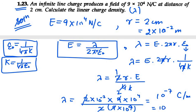Now if you want to convert this into micro coulomb, you can write it as 10 micro coulomb per meter. This is the value for linear charge density in question number 23.